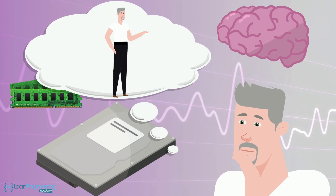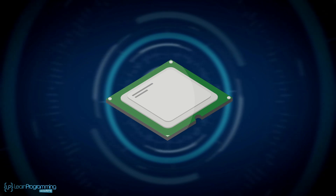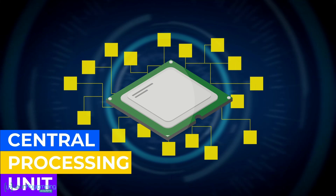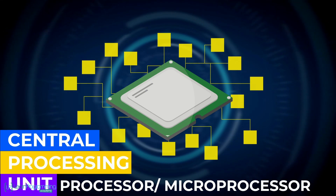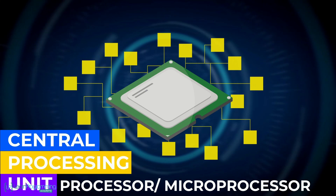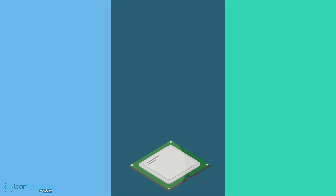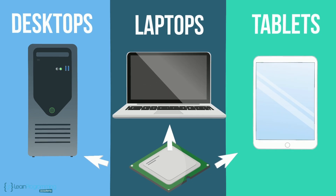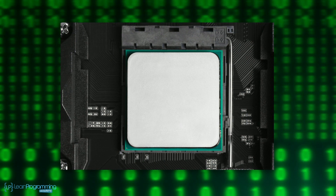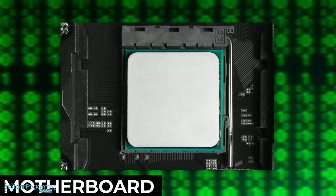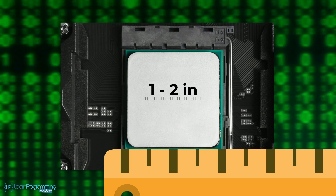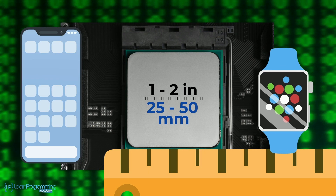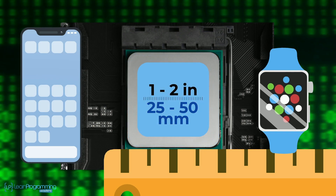First up is the CPU. The circuitry in a computer that controls the manipulation of data is called the central processing unit, or CPU, or often just a processor or even microprocessor due to its small size. The CPUs typically found in today's desktops, laptops, and tablets are small flat squares that plug into the computer's main circuit board called the motherboard. These CPUs are typically 1 or 2 inches, or 25 to 50 millimeters, in size. The CPUs found in smartphones and other small wearables are about one-half that size.